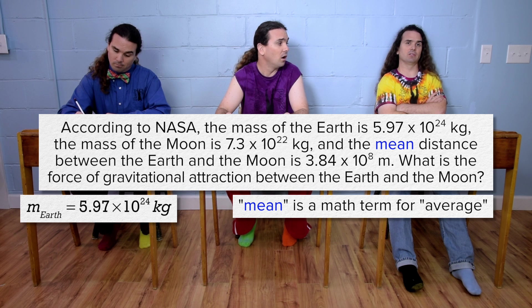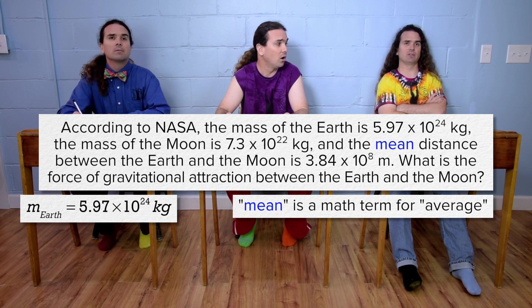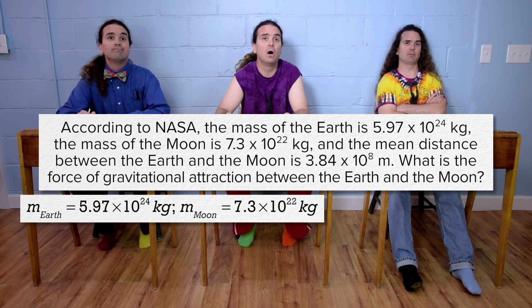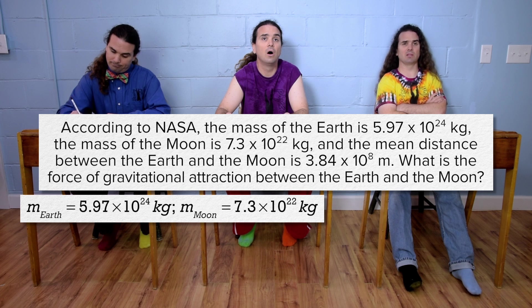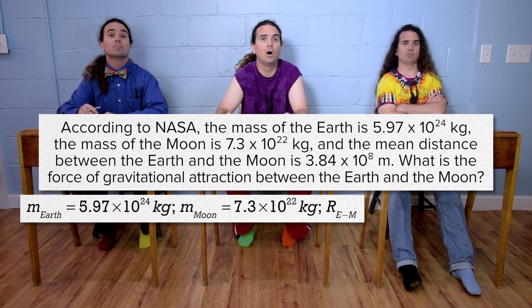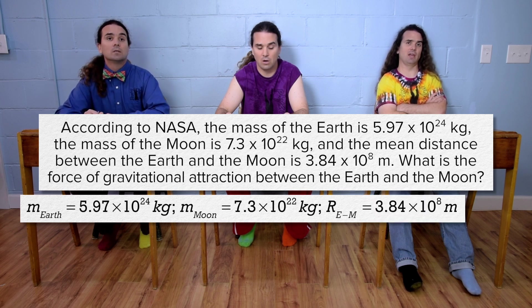Mass of Earth is 5.97 times 10 to the 24th kilograms, and the mass of the Moon is 7.3 times 10 to the 22nd kilograms. But I don't know what variable to use for the mean distance between the Earth and the Moon. Let's use capital R with a subscript of capital E dash capital M. Okay, that equals 3.84 times 10 to the 8th meters.